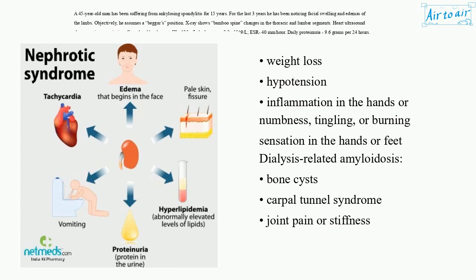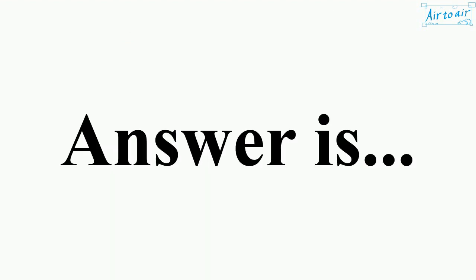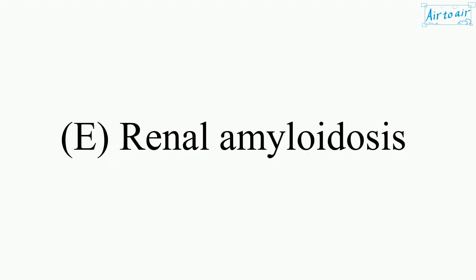Dialysis-related amyloidosis: bone cysts, carpal tunnel syndrome, joint pain or stiffness. The answer is E — Renal amyloidosis.